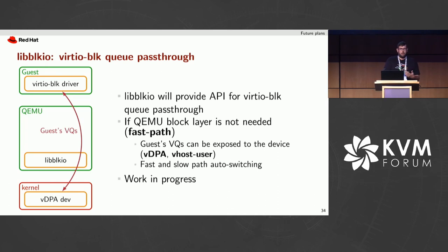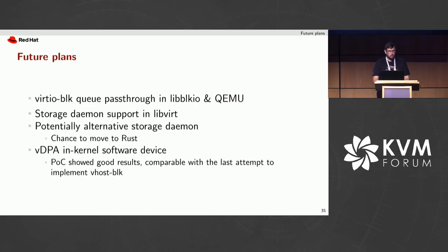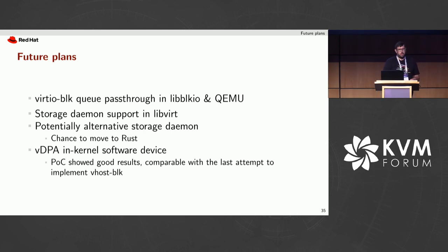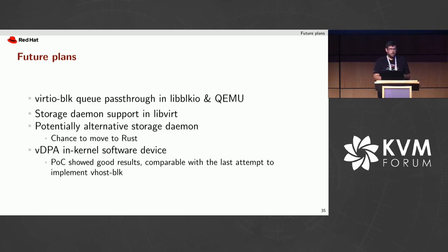Our idea is to extend the libblk-io API to enable virtqueue pass-through, so if the QEMU block layer is not needed — for example because the VM is not using any of its features — the guest virtqueues can be exposed directly to the device. This will work for both VDPA and vhost-user devices. We'd also like an automatic mechanism in QEMU to switch between fast and slow path at runtime, since features like IO throttling and live migration may be required while the VM is running. Summarizing future plans: implementing virtio pass-through in libblk-io and QEMU, supporting the storage daemon in libvirt, exploring a potential alternative Rust-based implementation, and completing the VDPA in-kernel software device proof of concept.